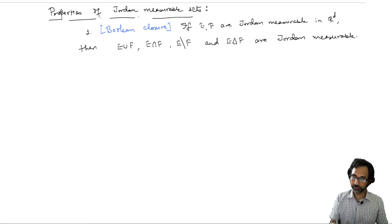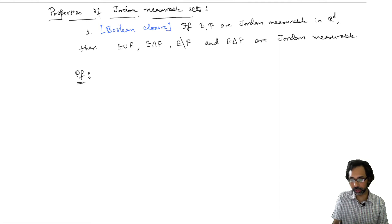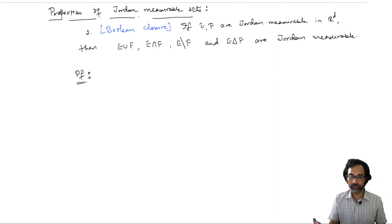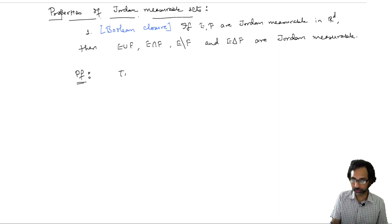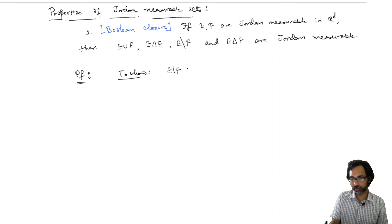Let me just prove one of them to illustrate the use of our equivalent conditions in the previous theorem. I will only prove that E minus F is Jordan measurable.